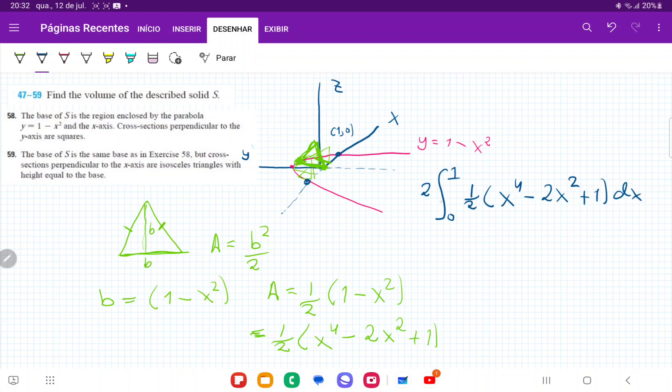So when we integrate this, I'm going to pull the 1 half outside. And that 1 half is going to cancel out with a 2. So this is basically just going to be x to the power of 5 over 5 minus 2x cubed over 3 plus x evaluated from 0 to 1, which is 1 fifth minus 2 thirds plus 1. The lower part just goes to 0.